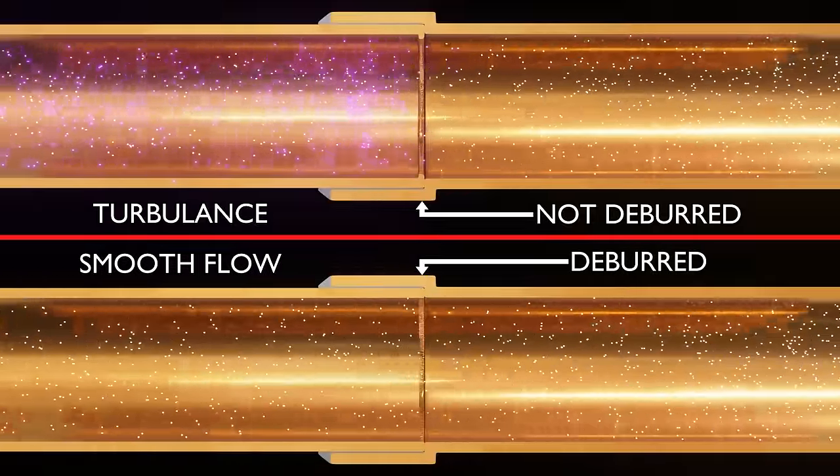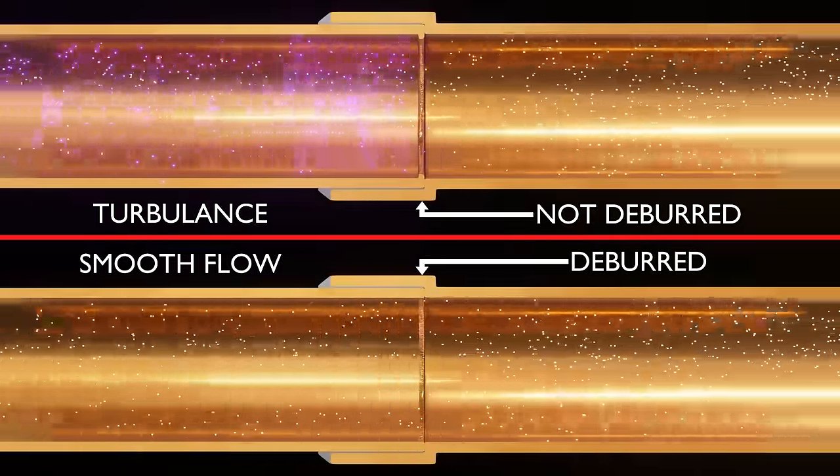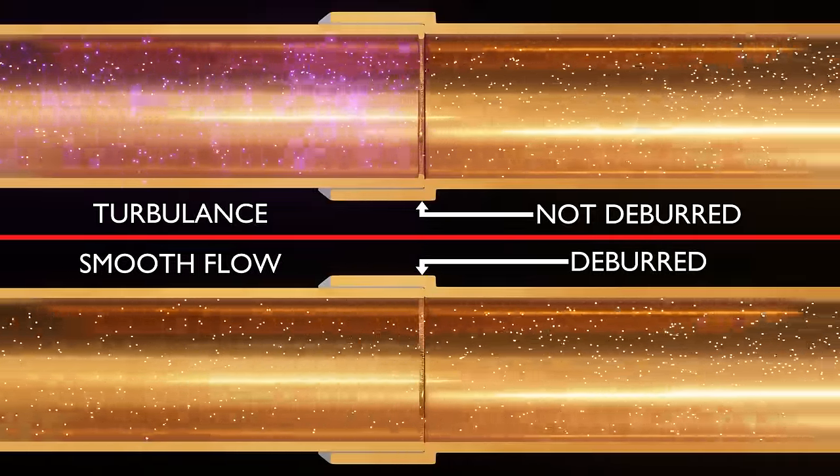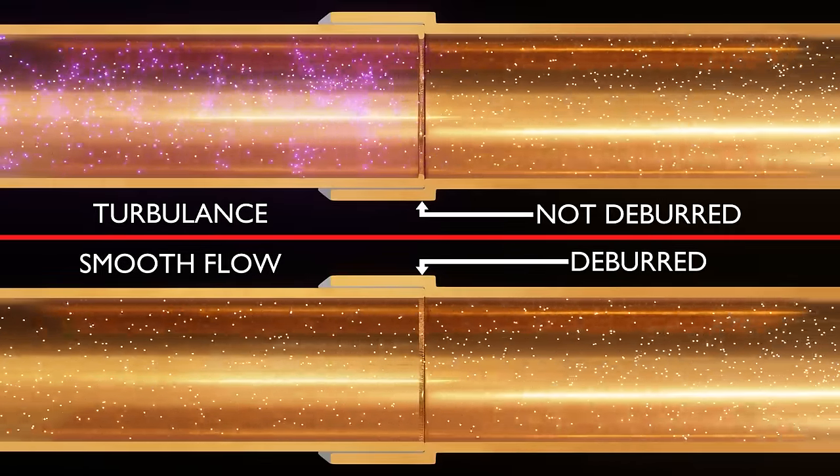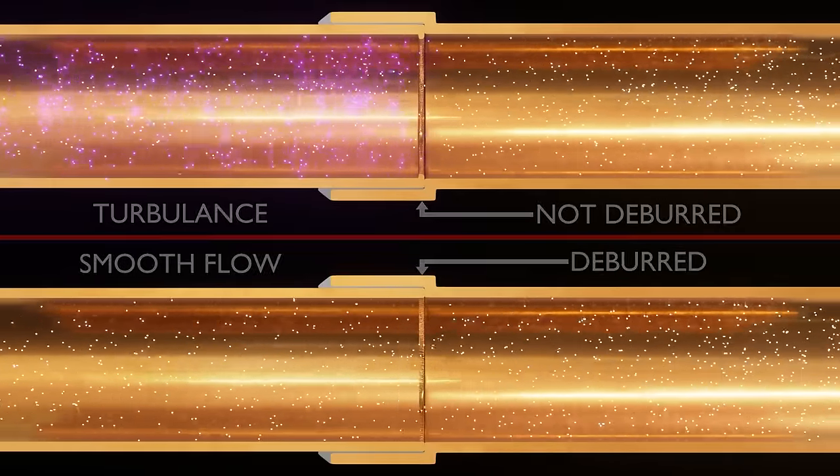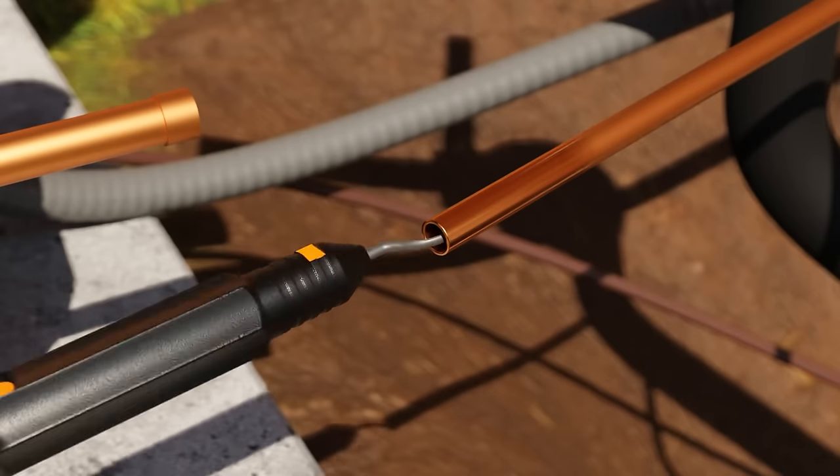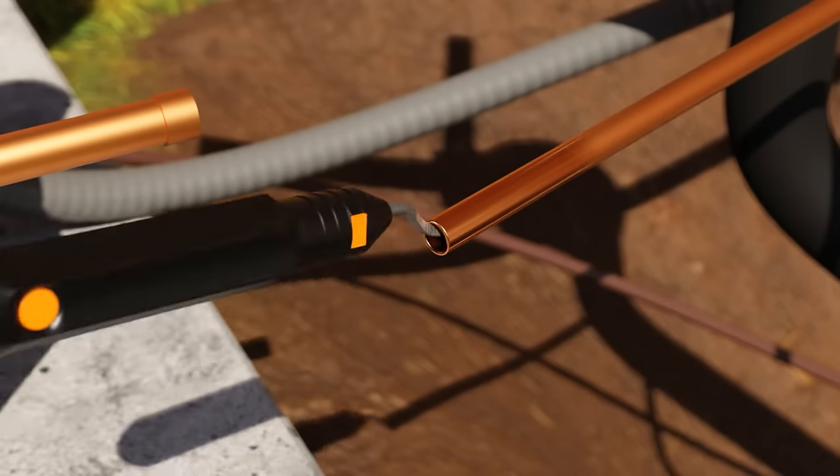Here we show the effects of failing to ream or deburr. It creates turbulence and turbulent flow on the outlet side, resulting in unnecessary friction and resistance to refrigerant flow. Keep in mind that deburring is especially important when making connections like flare connections, where the burr can impact the quality of the flared surface.